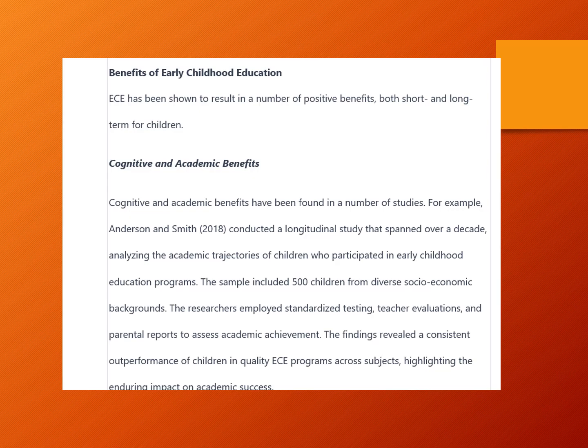The first section we come to is cognitive and academic benefits. The first sentence is a topic sentence: 'Cognitive and academic benefits have been found in a number of studies.' Then there's a discussion of one or two studies. The reason I've been trying to have you write a topic sentence before each study is that it makes a nice transition into the article.